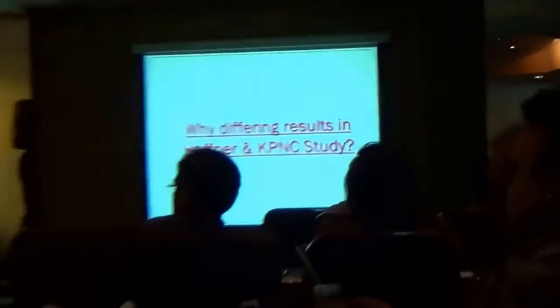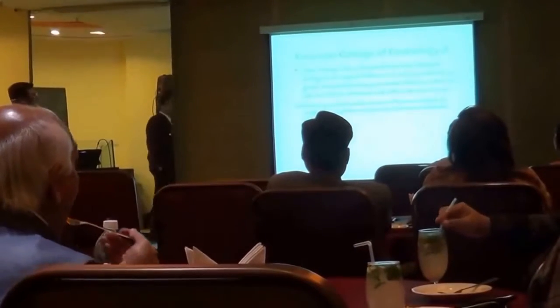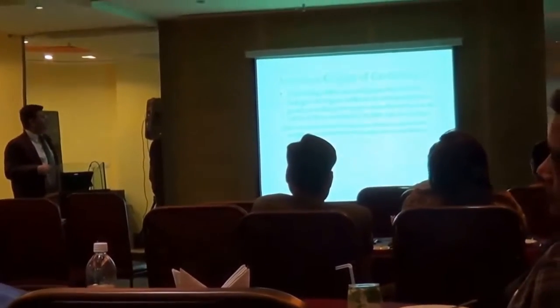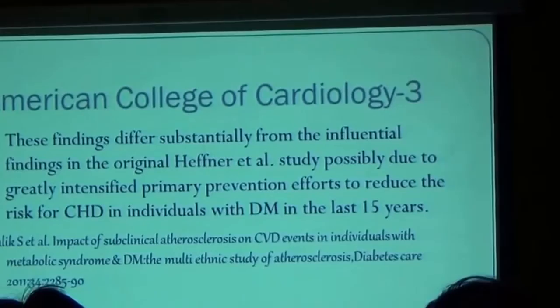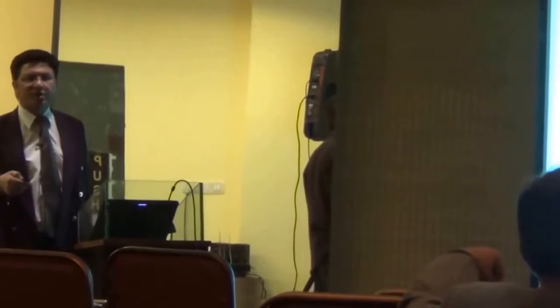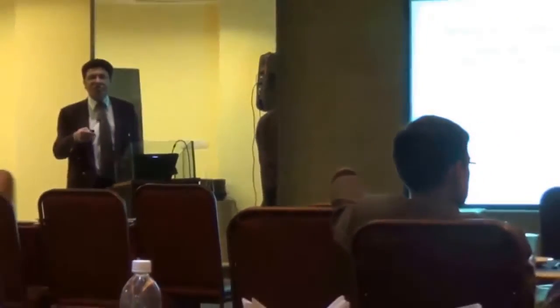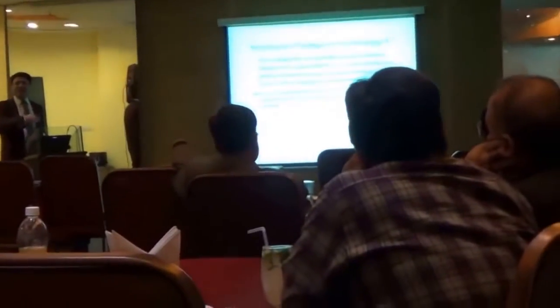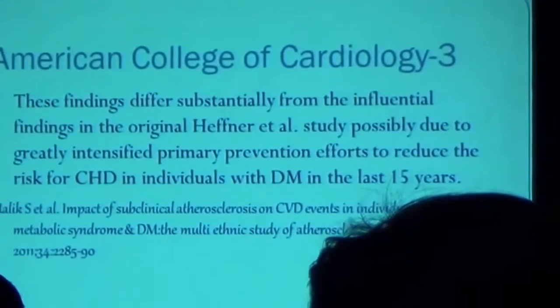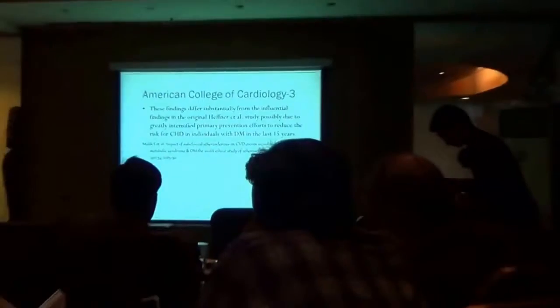Why are there differing results between the Haffner and KPNC studies? The American College of Cardiology concludes that these findings differ substantially from the influential findings of the original Haffner study, possibly due to greatly intensified primary prevention efforts to reduce the risk of coronary heart disease in individuals with diabetes in the last 15 years. The Haffner study was started in 1990 and published in 1998, while the KPNC study was published only last year — a gap of 15 years. In those 15 years, we have better diabetes medicines, patients are more aware about controlling diabetes, and physicians are more aggressive in controlling risk factors. That is why in 1990 it was a CAD equivalent, but presently it is not a CAD equivalent — it is at a slightly lower pedestal.